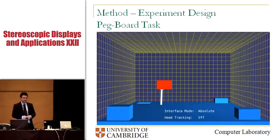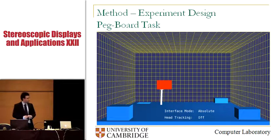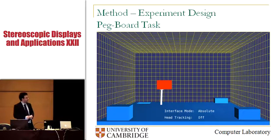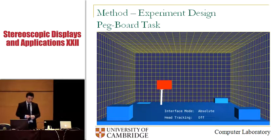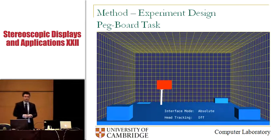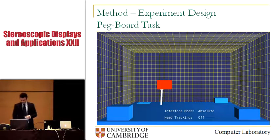Speed and accuracy were chosen as the best performance metrics for this experiment. In order to gather enough data, there were five holes and five pegs that fit into the holes, giving a total of 20 speed and 20 accuracy measurements per user for all four configurations of the experiment.